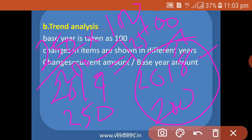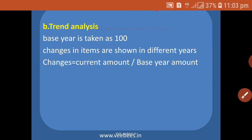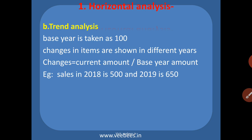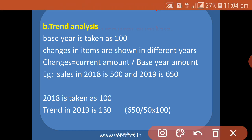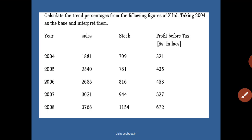This 125 is taken as the 2019 figure. Here is an example: sales in 2018 is 500, and in 2019 is 650. The 2018 figure of 500 is taken as 100, and we find the trend of 2019 as 130. It is calculated as 650 (current year amount) divided by 500 (base year amount), multiplied by 100, giving 130. This is how we prepare the trend analysis statement.